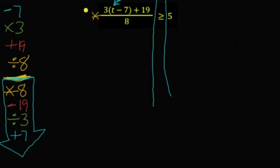Times 8 gets rid of a divide by 8, times 8 over here keeps the balance of the inequality. And we'll have 5 times 8 is 40.